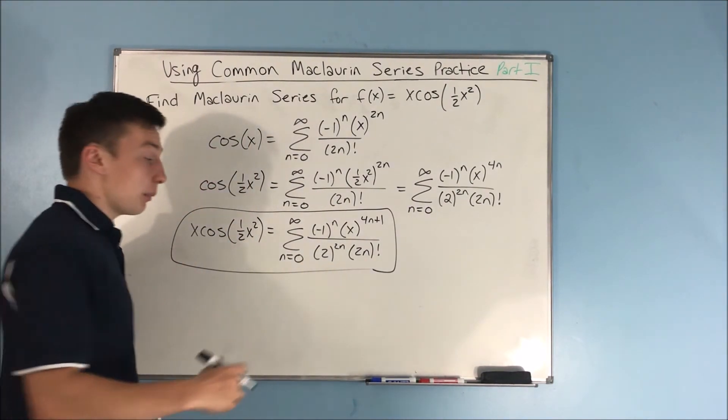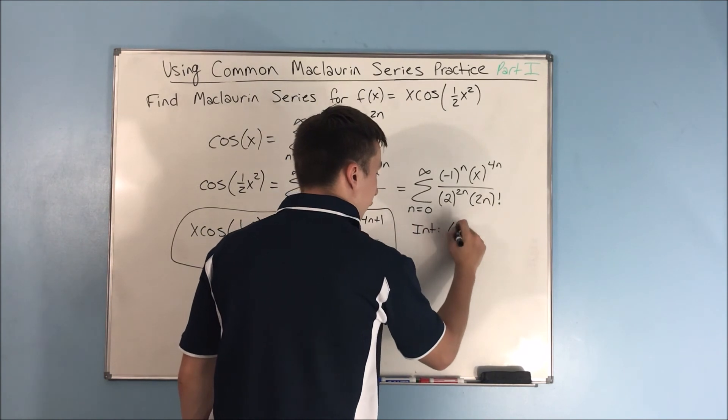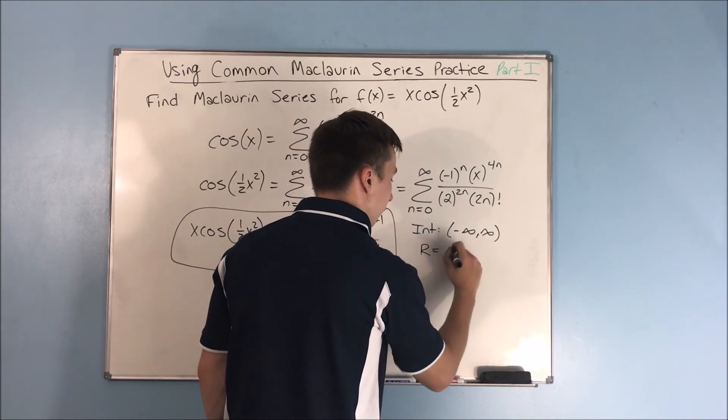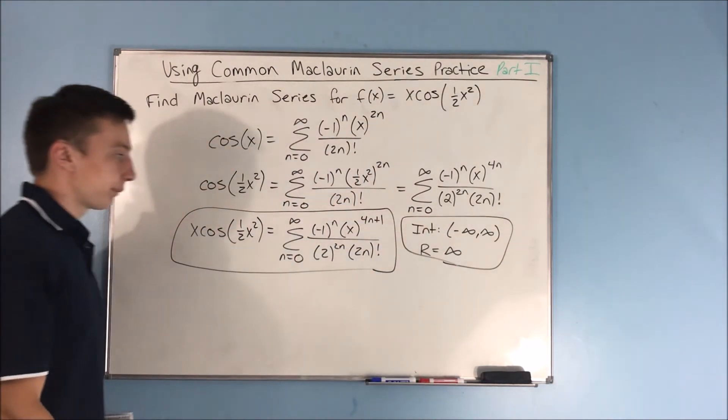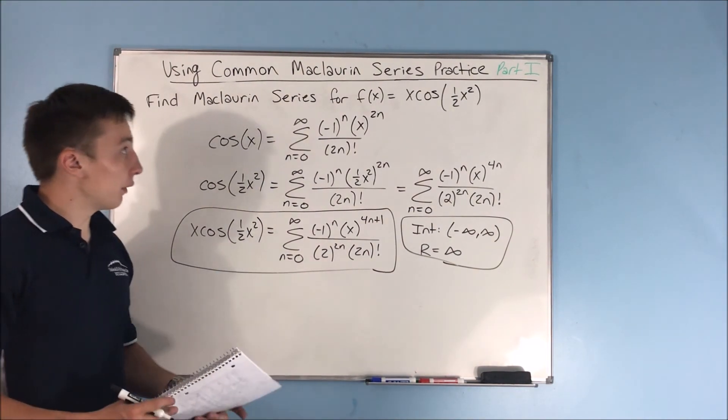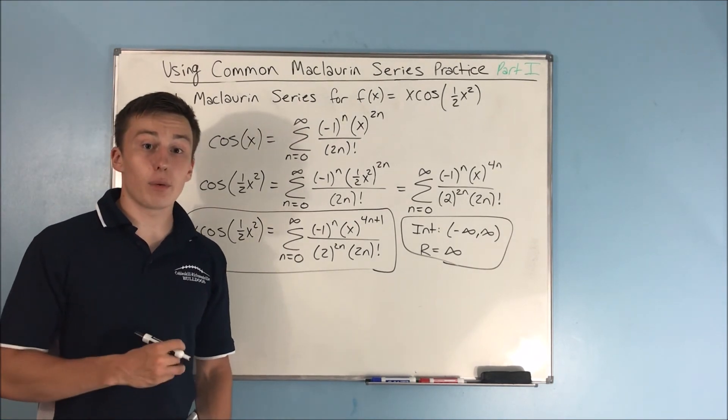Of course, your interval of convergence is going to be negative infinity to infinity, just as it is for the cosine Maclaurin series, and your radius of convergence is going to be infinite. That is your Maclaurin series for x·cos(½x²). If this video helped you, make sure to leave a like and subscribe. You can also view the playlist for sequences and series, the explanation video for using common Maclaurin series, and the next video in the series. I also have my Patreon linked in the description below.